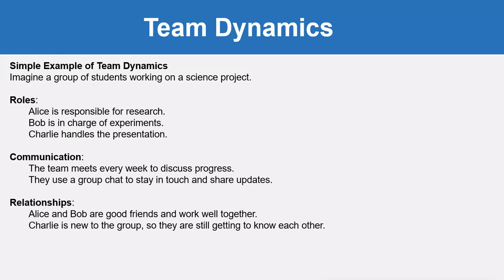Let's take a simple example. Imagine a group of students working on a science project. There are three main roles: Alice is responsible for research, Bob is in charge of experiments, and Charlie handles the presentation. For communication, the team meets every week to discuss progress and uses a group chat to stay in touch and share updates. For relationships, Alice and Bob are good friends and work well together, while Charlie is new to the group and they are still getting to know each other.